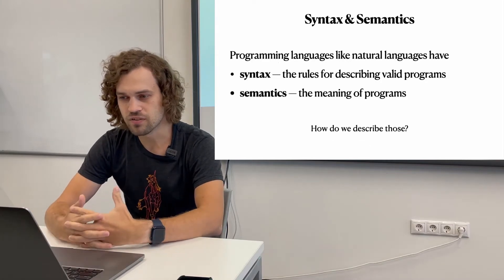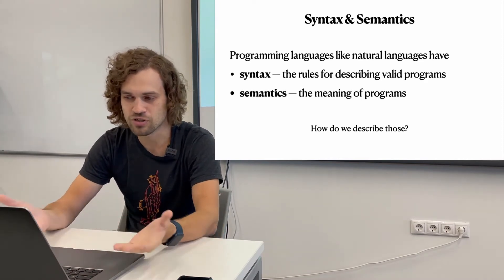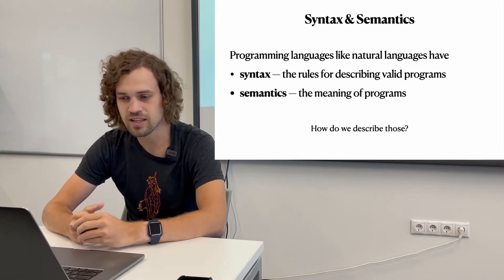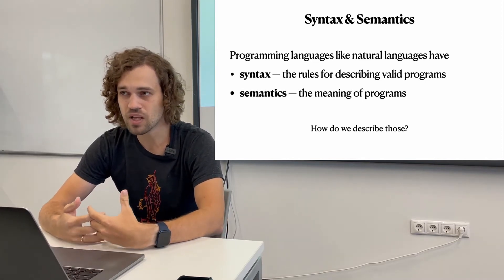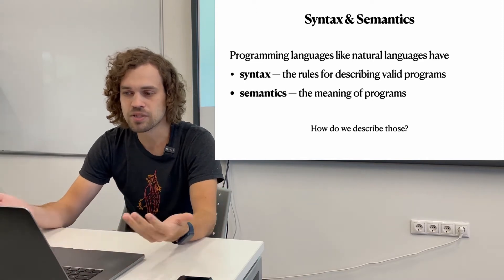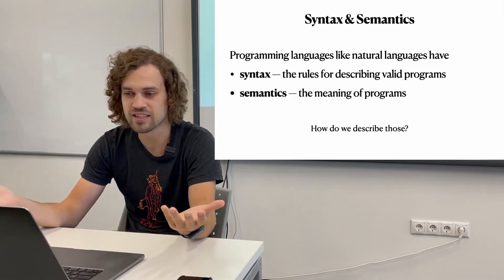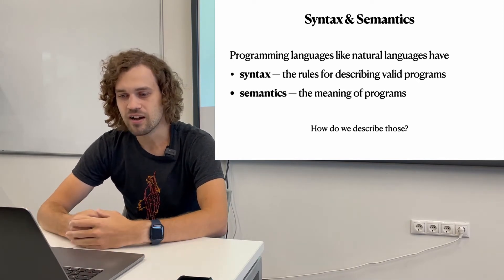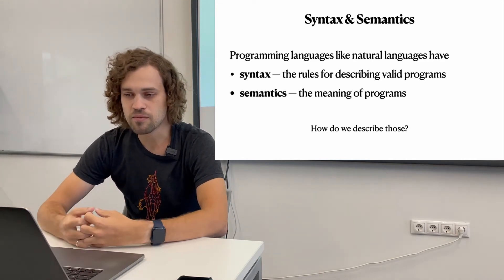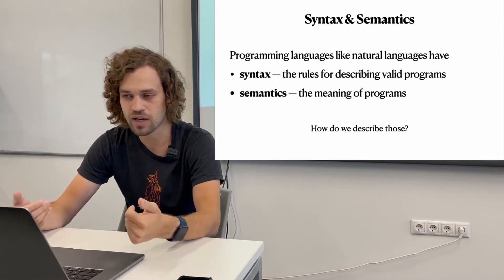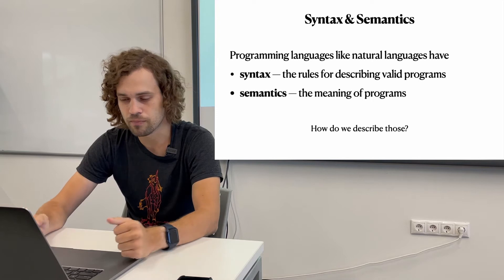So first of all, there are two things that programming languages and natural languages also have. One is called syntax and the other is called semantics. The general intuition is that syntax is basically the rules, like a grammar, that describes what words in what order can be present in a language to be a valid sentence. But then semantics tells us what is the meaning of the sentence.